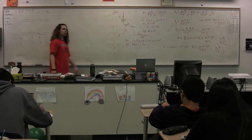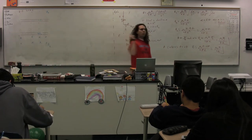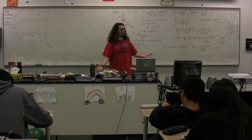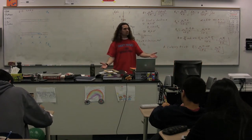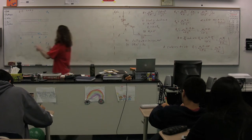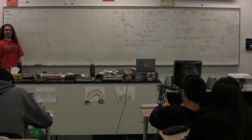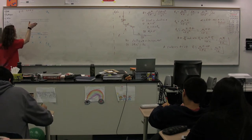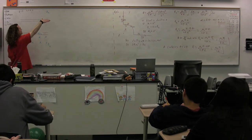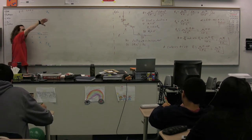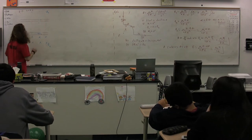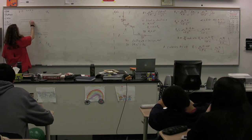Which means wire one is in wire two's magnetic field. Which means wire one has a current in a magnetic field. So we get out the right-hand rule: we point our fingers in the direction of the current, curl them in the direction of the magnetic field, and our thumb points in the direction of the force on wire one, which is toward wire two.